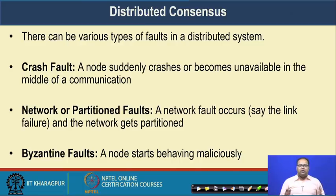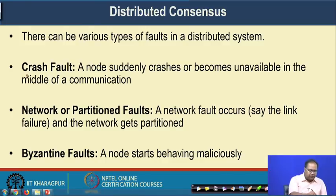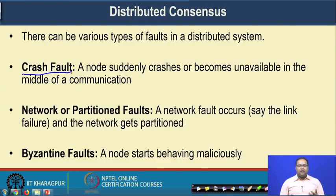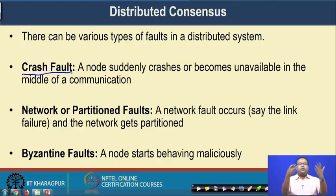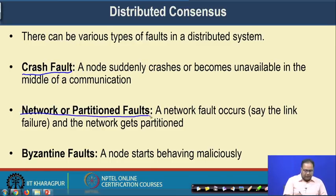However, achieving consensus can be non-trivial in a distributed environment due to the presence of multiple types of failures. Typically in a distributed system we consider three different types of failures. The first is called the crash fault: a node suddenly crashes or becomes unavailable in the middle of a communication, so you are not expected to receive any message from that particular node. This is one type of typical fault — a kind of hardware or software fault due to which the node or process which is communicating with another one fails. The second type of fault is network fault or partition fault: this is when a network link fails, and a network failure may result in a partition in the network.